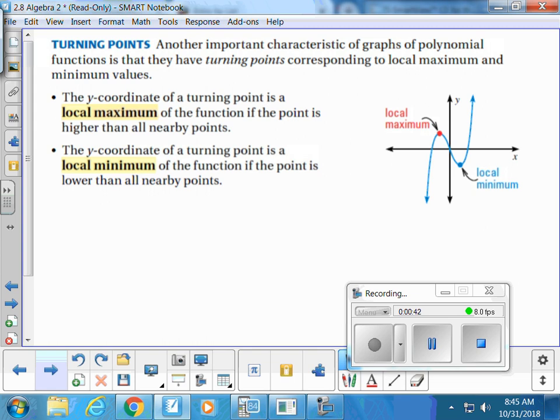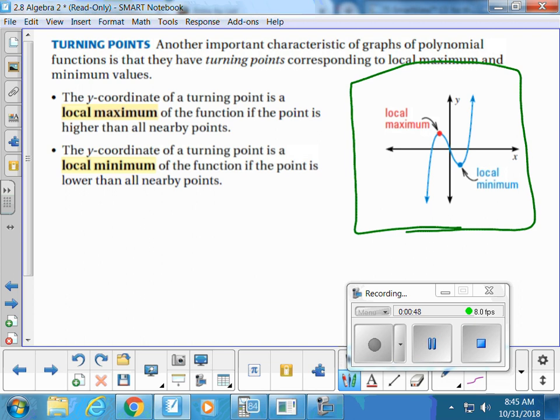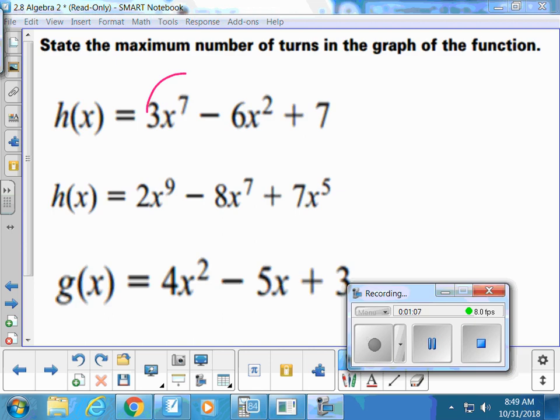We're going to start with talking about what turning points are. I would probably just draw a picture, label this as a local maximum and label this as a local minimum. Local maximums and local minimums can also be referred to as turning points because it's where the graph makes a turn and heads the other direction.